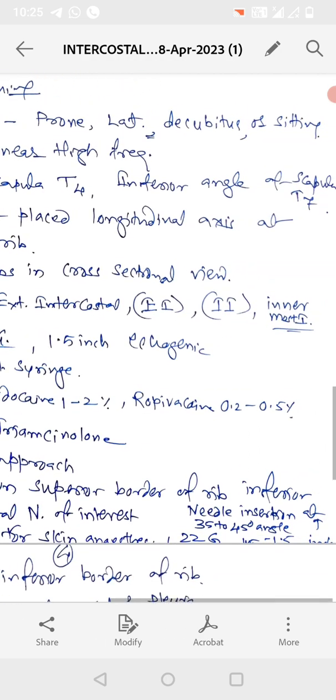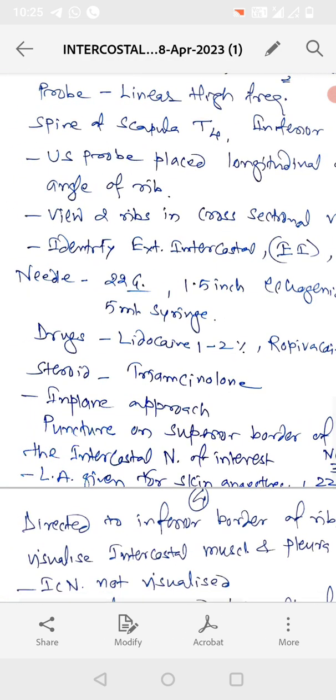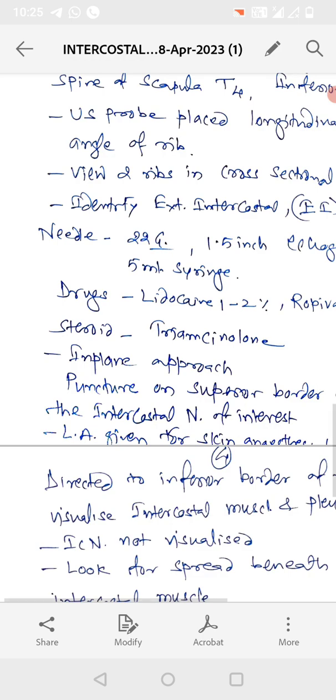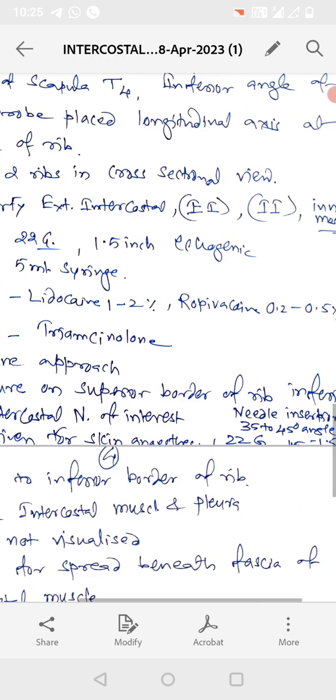The inferior angle of scapula corresponds to T7. The ultrasound probe is placed in longitudinal axis at angle of the rib. It views two ribs in cross sectional view.